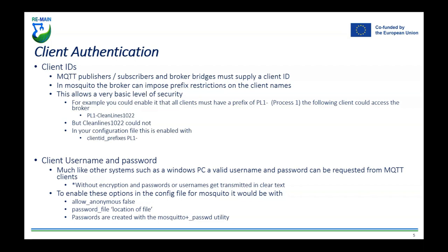Each broker can have its own set of security certificates or passwords, allowing a more robust approach. When we talk about client authentication, you want to authenticate that a client is genuinely within your network trying to access your resources. MQTT publishers and broker bridges must supply a client ID. In Mosquitto, the broker can impose prefix restrictions on client names — for example, all clients must have a prefix of 'PL1' for process line one.